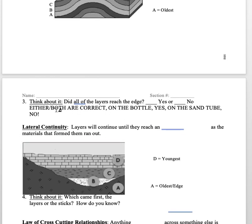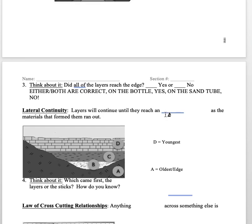Did all the layers reach the edge? Either or both answers are correct. You could say yes, you could say no. On the bottle, yes, they all went to all the edges, but on the sand tube sometimes not. Sometimes you ran out of one kind of material or another before it actually finished.